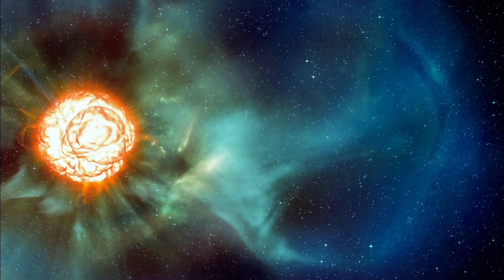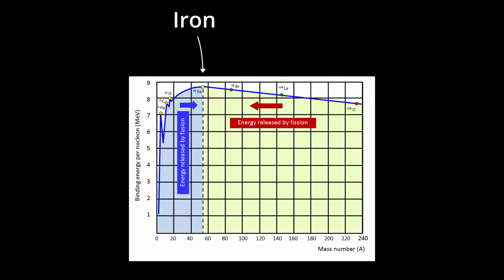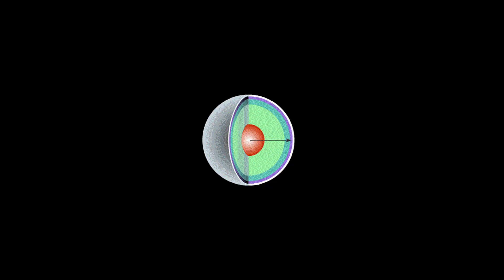The fusion of elements continues until the production of iron, which cannot be fused further due to the fact that its fusing would cause more energy than it would be producing. And so a massive sphere of iron is slowly growing in the core of the star.